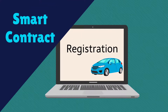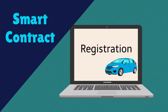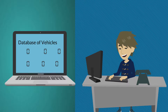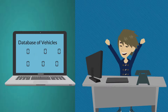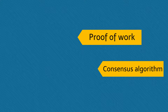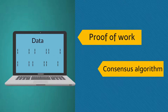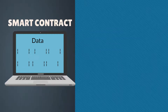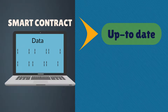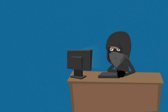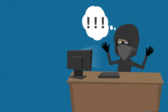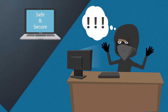With the help of smart contracts, the registration can be done in a decentralized database. The details are stored in the database of the vehicles and can be accessed by individual owners. Proof of work, consensus algorithm, etc. are used for validating and storing the data. Smart contracts ensure that the database is up to date and secure, and they prevent unauthorized access. Any sort of data tampering would be impossible.